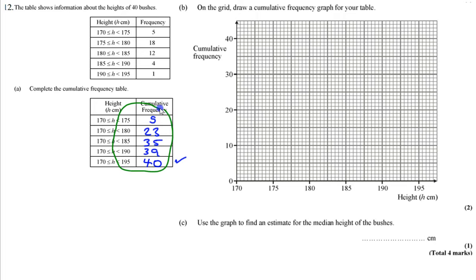So, 175 and 5. So we're saying that 5 bushes were less than 175 centimetres. I know that no bushes were less than 170 centimetres, according to my table. So I can start with a 0 over here as well. There were 23 bushes that were less than 180 centimetres. So I can mark my 23 against 180.